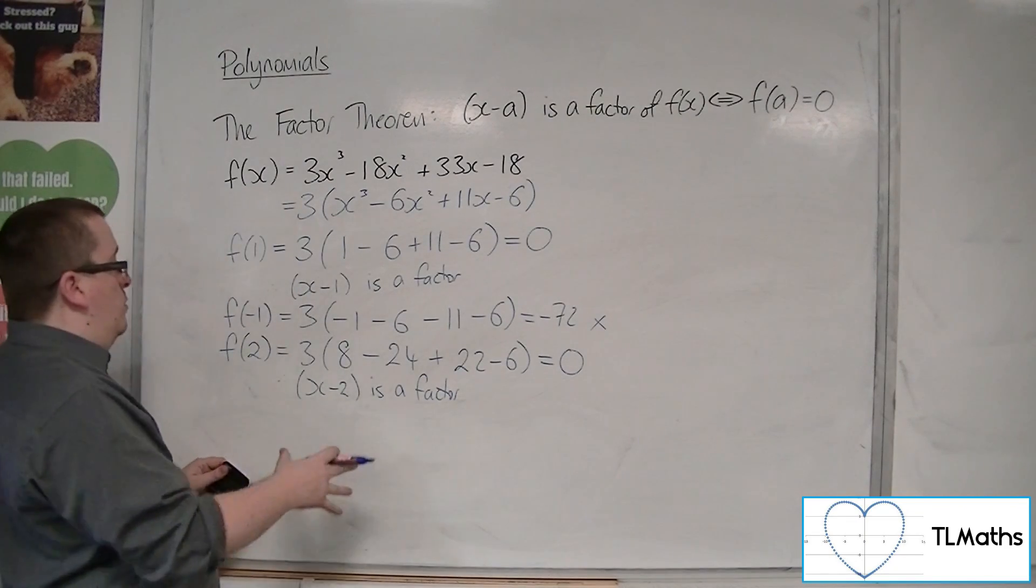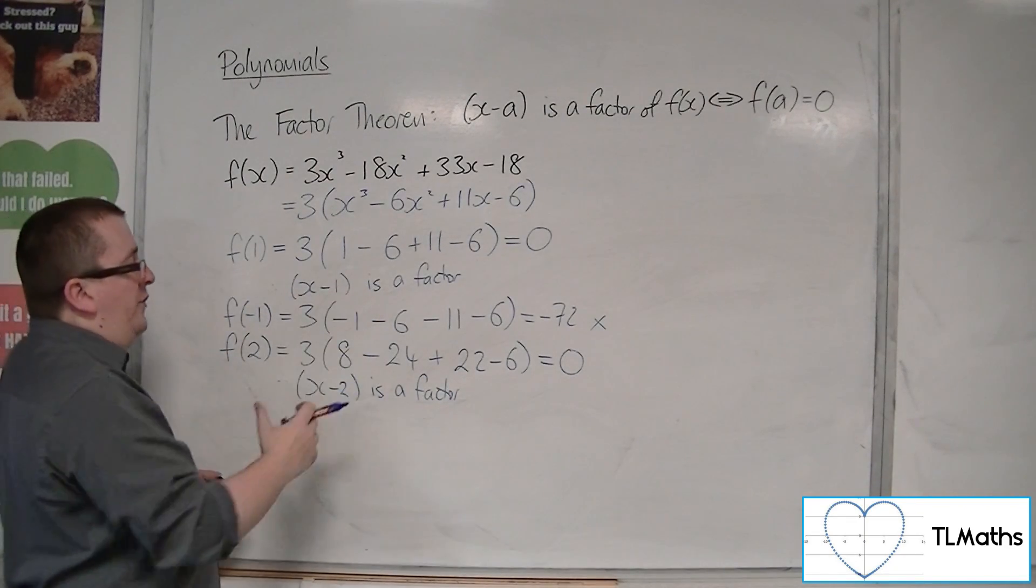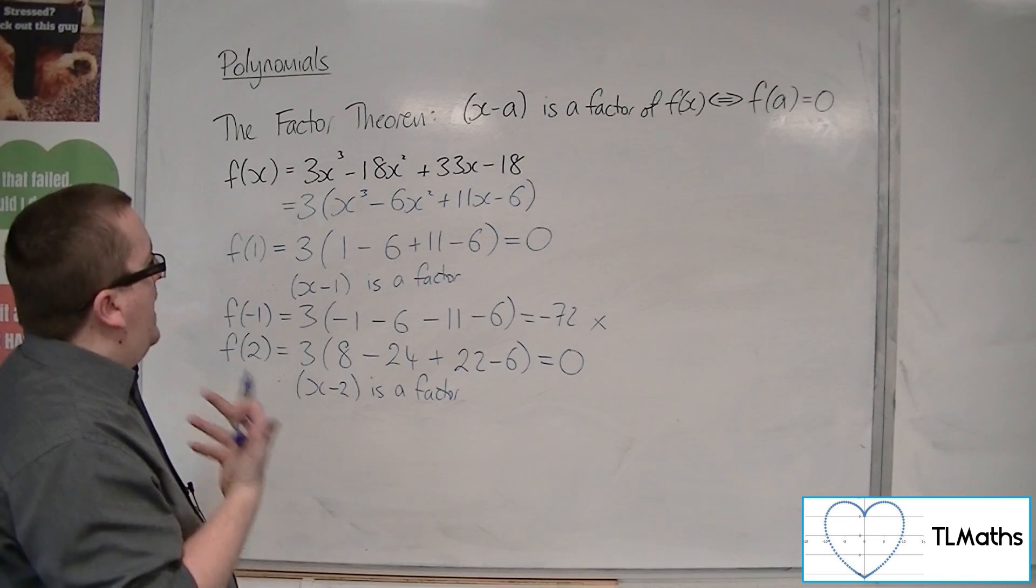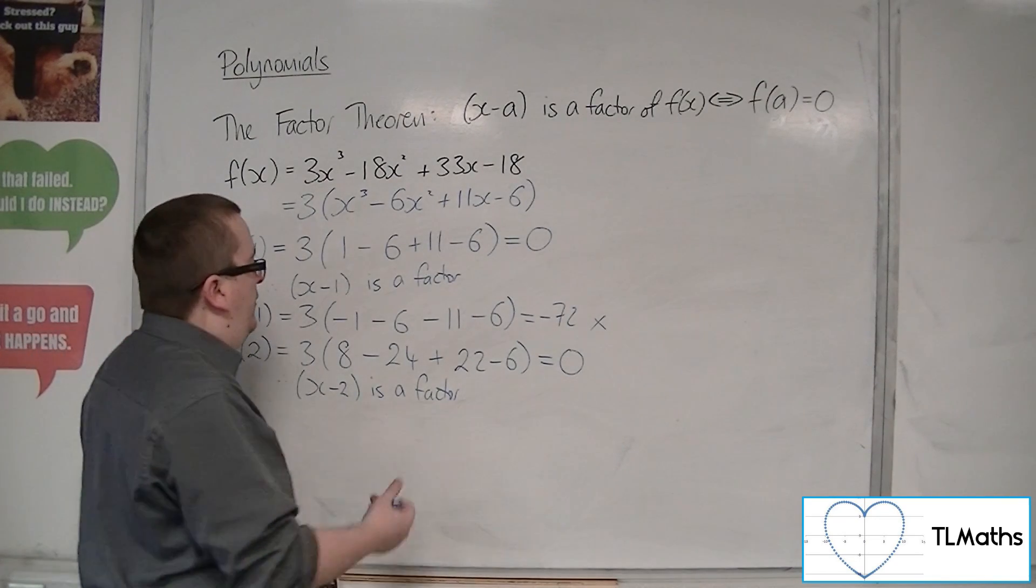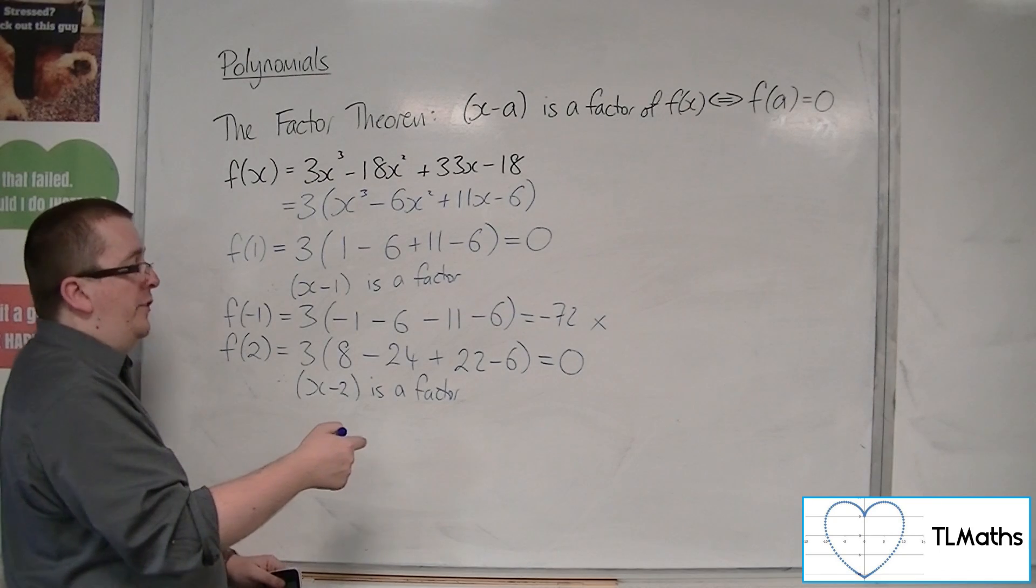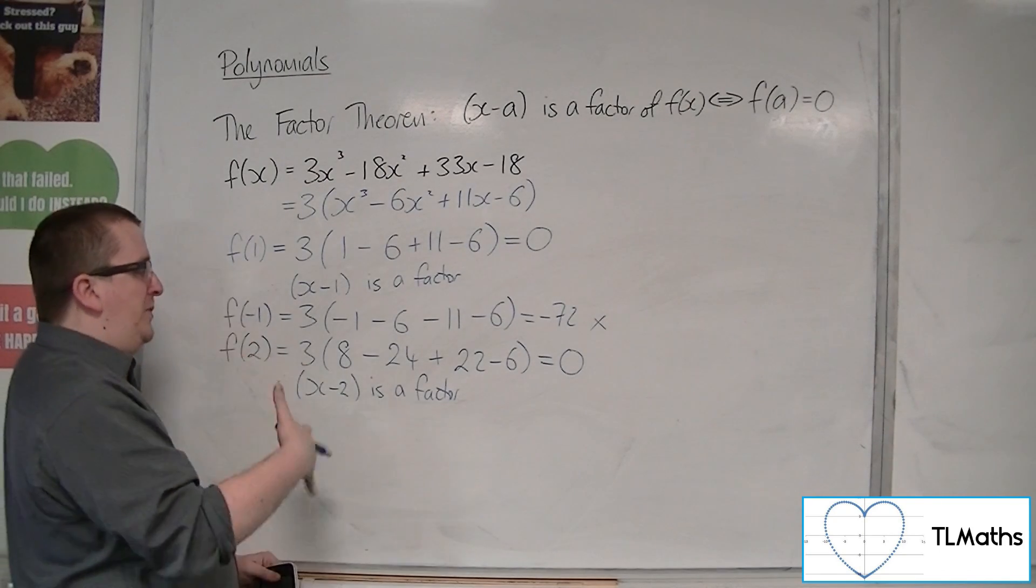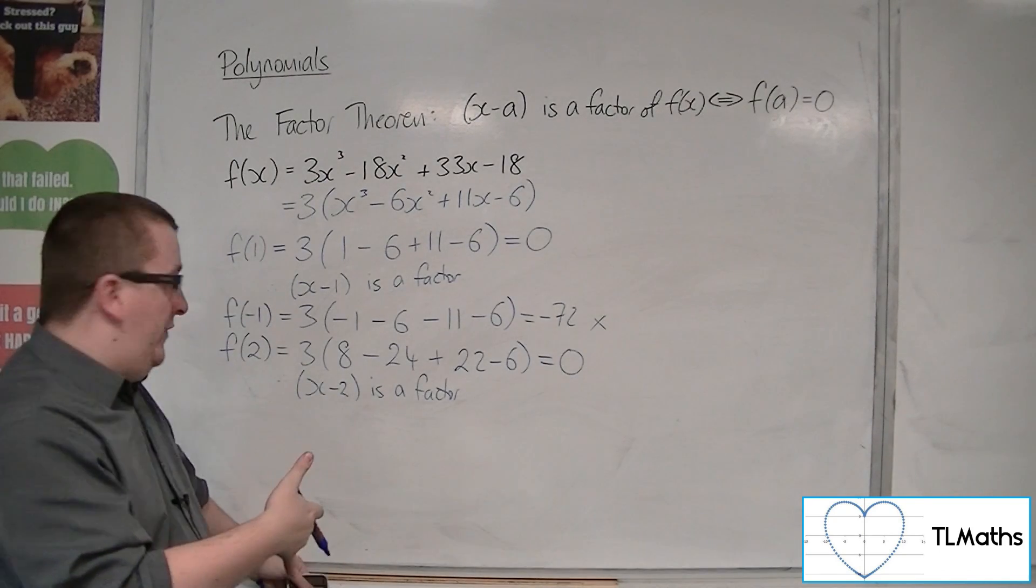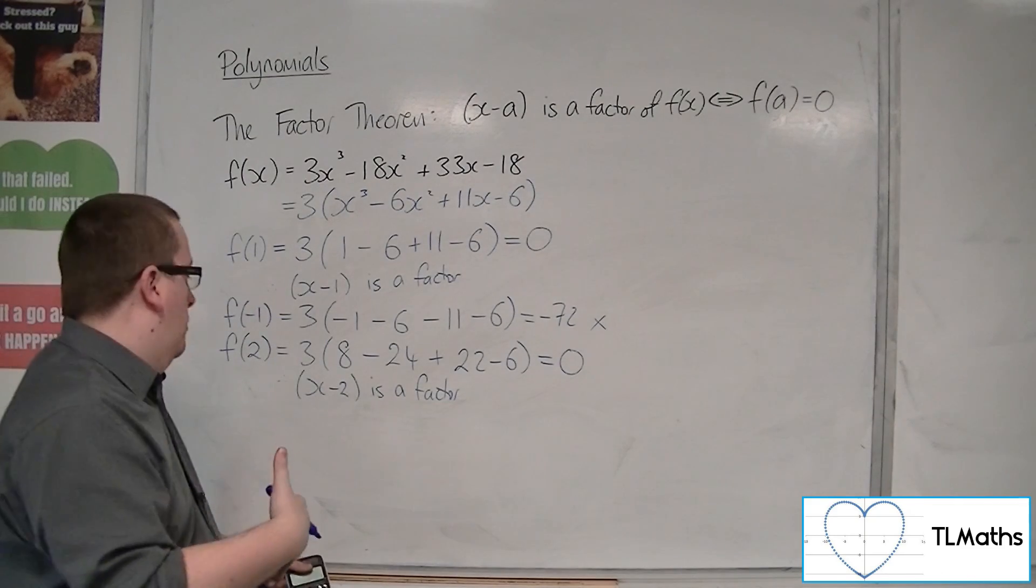OK, so what we've got already is x minus 1 times x minus 2. Then we need to get minus 6, so we would have to multiply by minus 3. So substituting f of 3 should get a 0, so that should be the next one that we would look for.